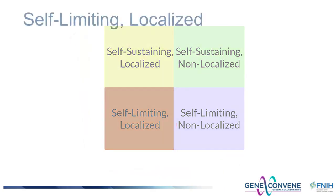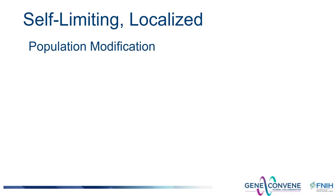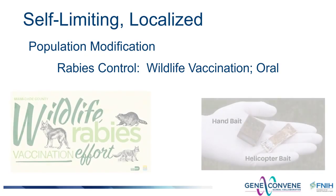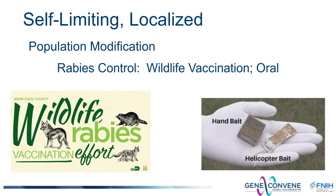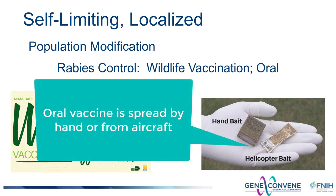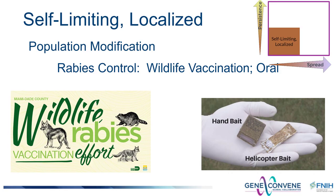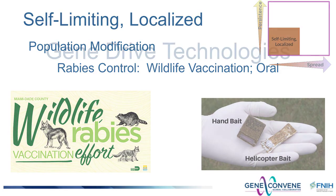At this point, I'd like to introduce a genetic control technology that is self-limiting and localized but results in population modification, not suppression. There aren't many examples of population modification technologies, but there are a few. In the United States and Europe, rabies has been and continues to be managed by oral vaccination of mammalian reservoirs of the virus — raccoon, skunk, fox. Here, somatic genetics has been intentionally modified. Since immunity is not heritable, the effect is self-limiting and localized. While wildlife vaccination against rabies is perhaps the most successful population modification genetic biocontrol technology, it is being used against other zoonotic pathogens.